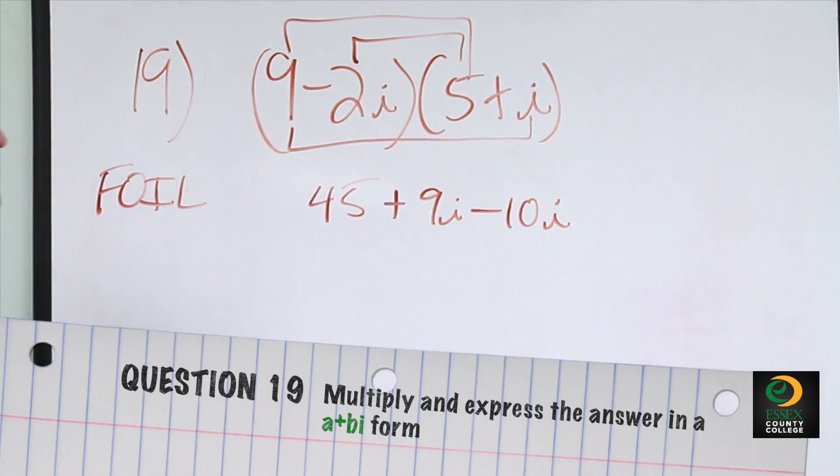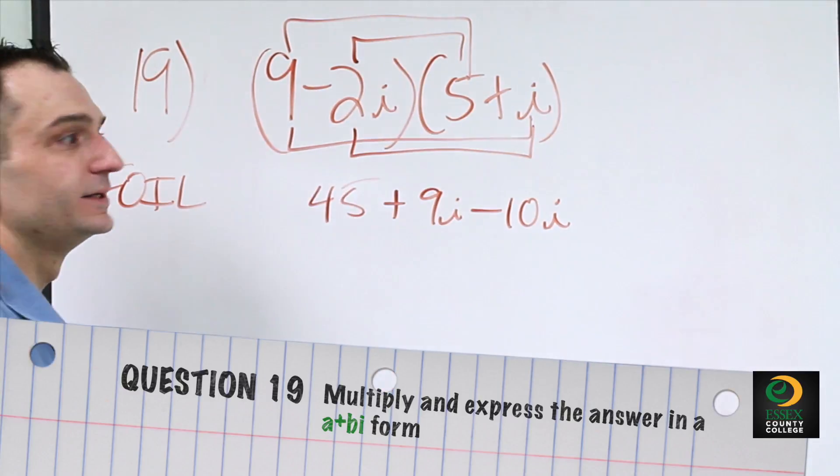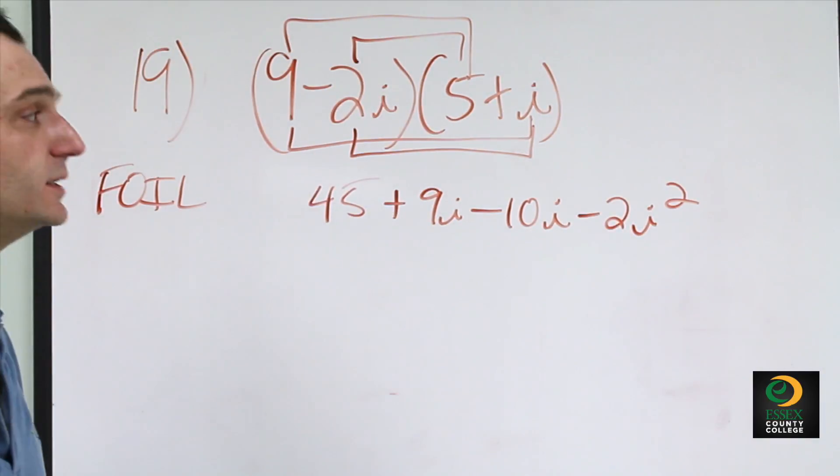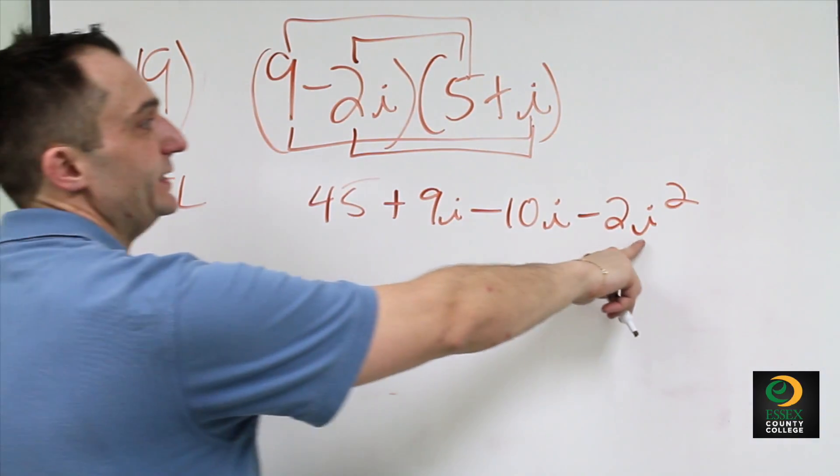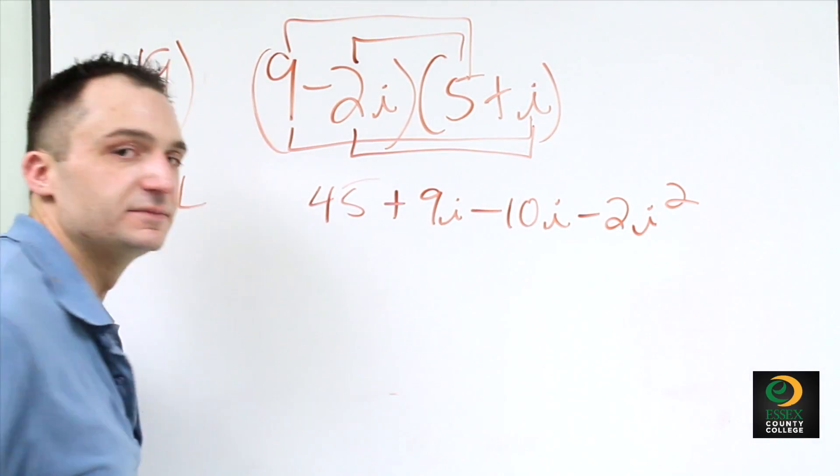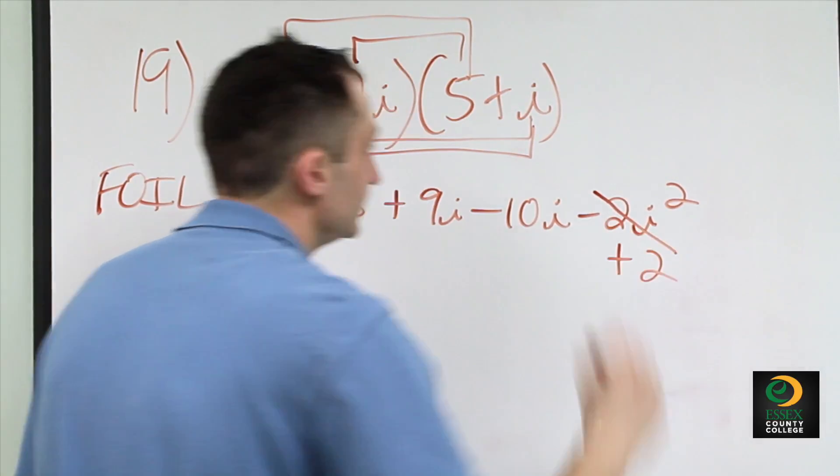The L stands for last. We do negative 2i times i, which becomes negative 2i squared. i squared equals negative 1, so negative 2 times negative 1 simplifies to positive 2.